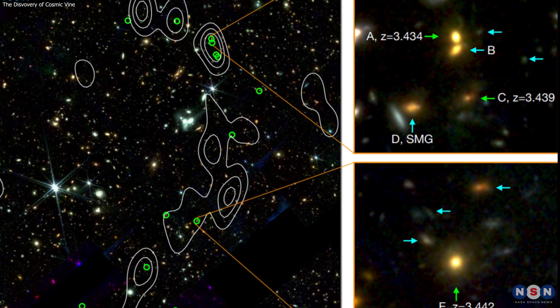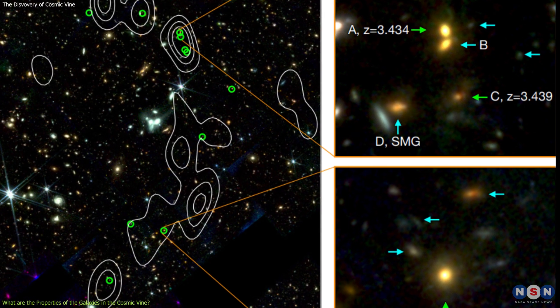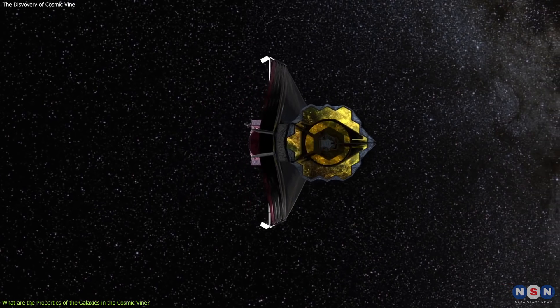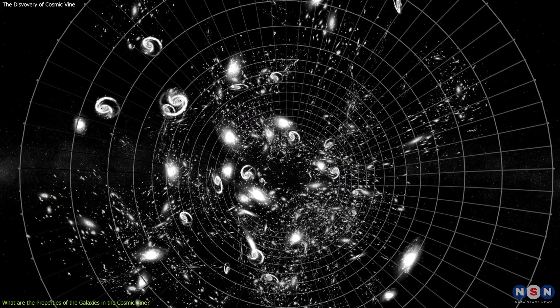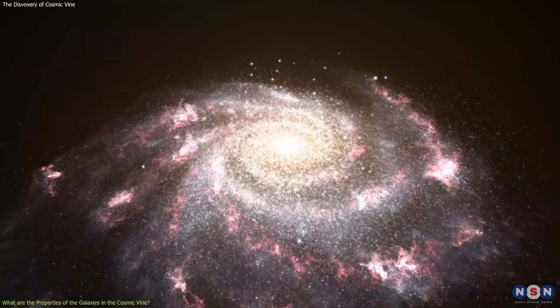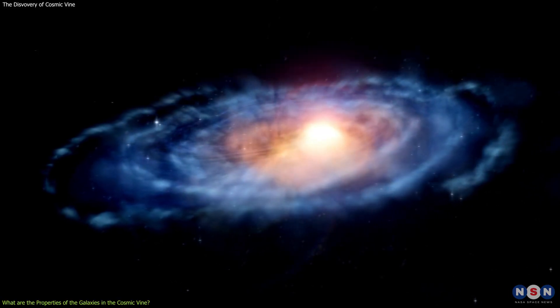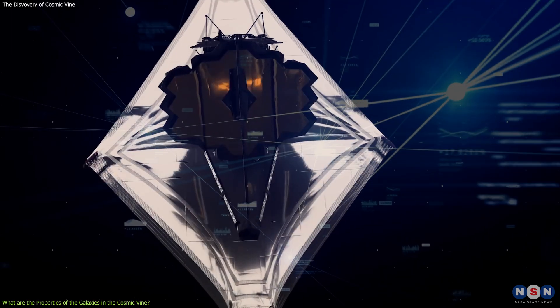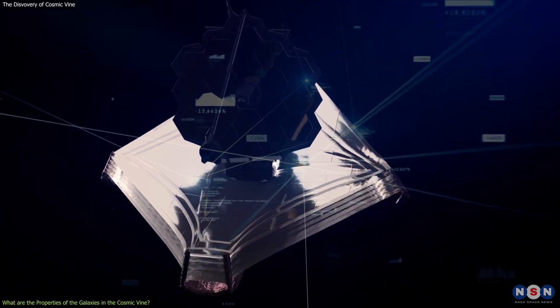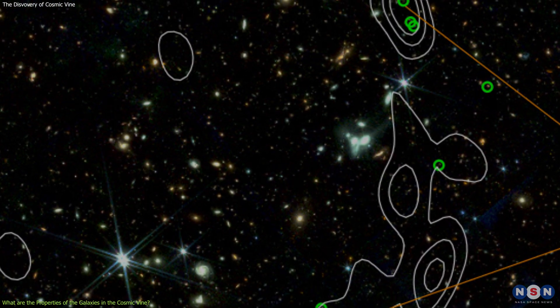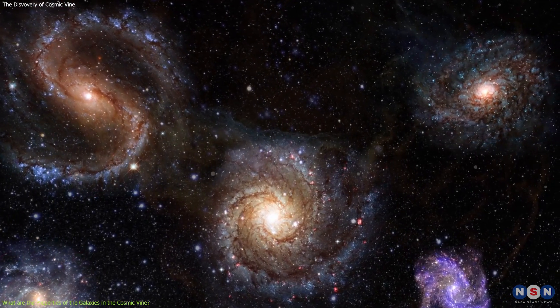The galaxies in the Cosmic Vine are not only far and old, but also diverse and complex. The astronomers used data from James Webb to study the properties of the galaxies in this huge structure, such as their stellar masses, star formation rates, dust contents, and morphologies. By analyzing the data from Webb Telescope, the astronomers could measure the brightness and the color of the galaxies in the Cosmic Vine, which are related to their physical characteristics.